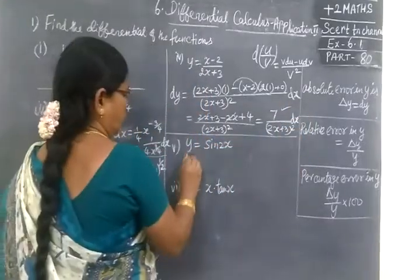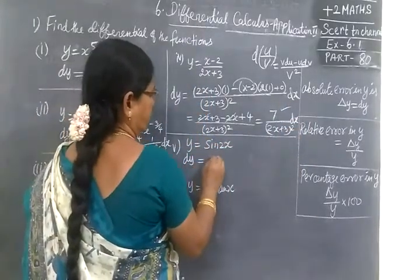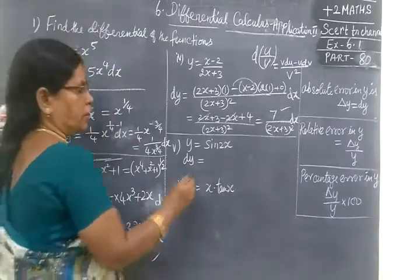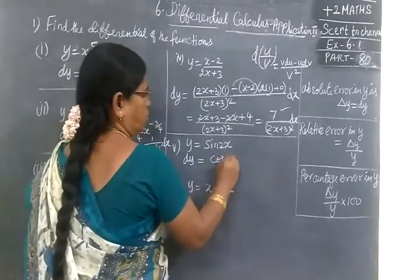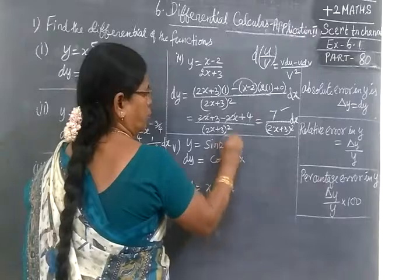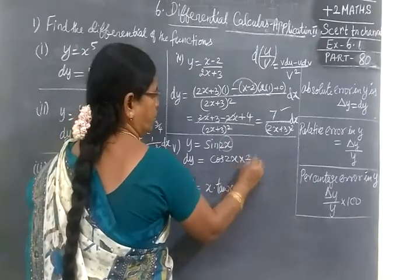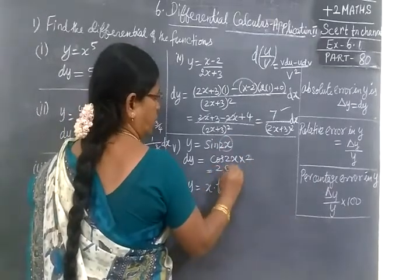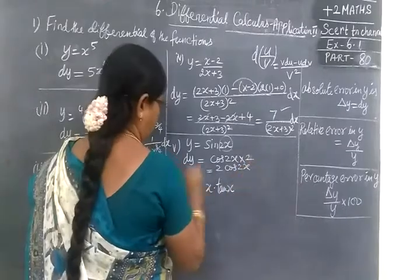Now here you will write dx equal to sin 2x. So cos 2x into inner function. 2x differentiation into 2. So answer 2 cos 2x here.